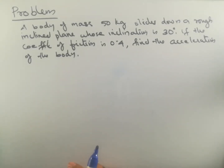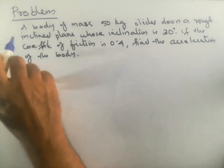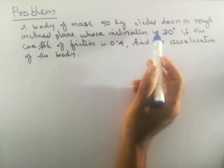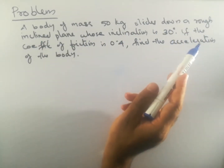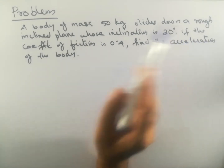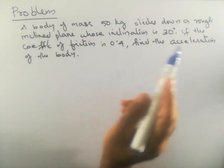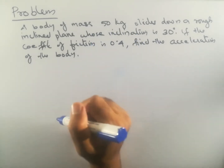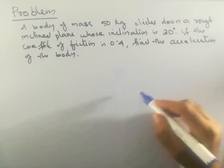We will see how to solve a problem in which a body is sliding over a rough inclined plane. A body of mass 50 kilogram slides down a rough inclined plane whose inclination is 30 degrees. The coefficient of friction is 0.4 between the block and the inclined plane. Find the acceleration of the body.